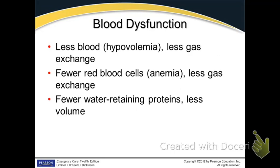Hypovolemia — hypo meaning low, volemia meaning volume — so you have less volume, fewer red blood cells to pass on, and you lose gas exchange. Anemia means fewer blood cells, so fewer oxygen carriers. There are also differences in the proteins and nutrients in the water. Sodium is really important and it works with the renal system to balance water and fluids. Once you get further into all this, it becomes quite complicated, but in the EMT part we try to keep it simple.